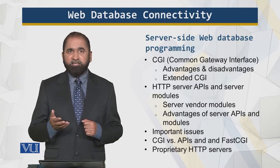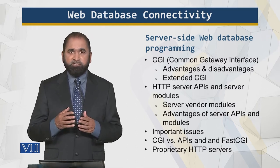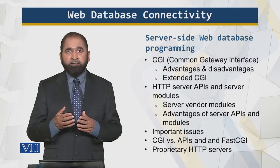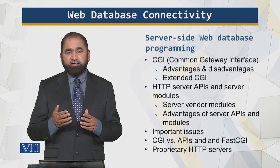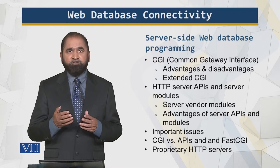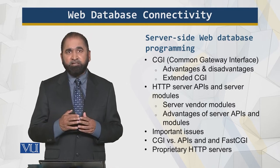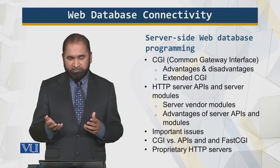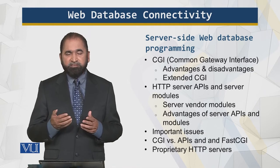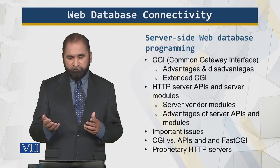CGI — Common Gateway Interface — programming is done using C, using C#, and traditionally it was done in Perl. The advantages are it is independent of the platform, independent of the language being used, so it is very flexible, and independent of the server being used. The advantage is that the possibilities are limitless. We also have extended CGI, which supports independence and has certain additional features.